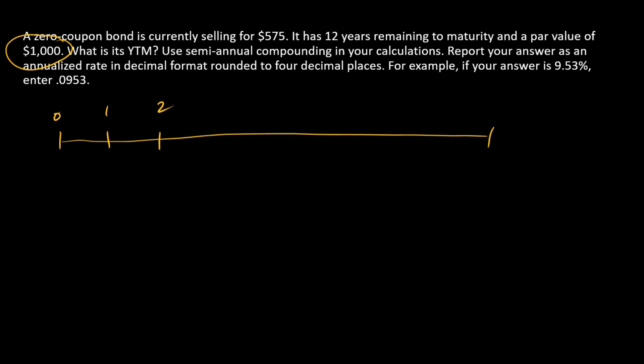And so we're left with just a single par value repayment at maturity. That's going to be a $1,000 repayment. We've got 12 years remaining to maturity, and we're going to think about this problem as a semi-annual periodic problem. So we have 24 six-month periods on the timeline, and there's our single cash flow $1,000 at maturity.